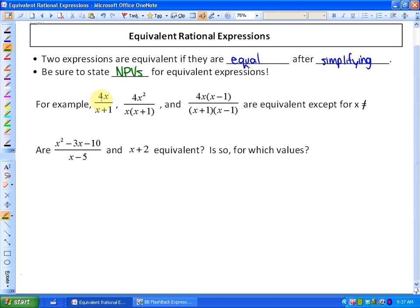For example, all of these terms: 4x over x plus one, 4x squared over x times x plus one, and 4x times x minus one over x plus one times x minus one - they're all equivalent because if I was to simplify them. So let me show you, for example, in this second one.